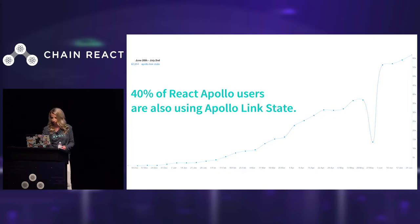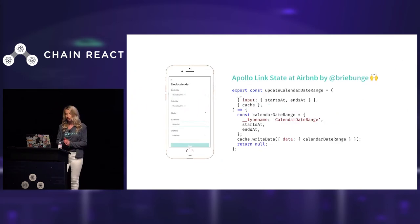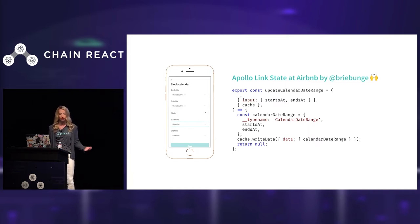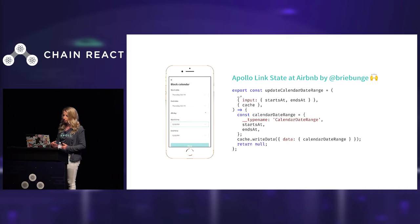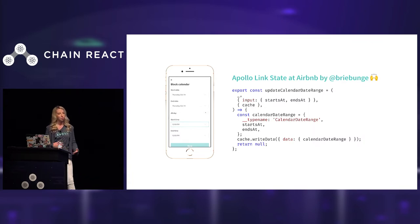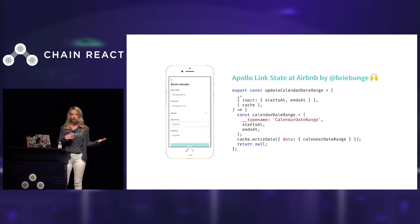Even Airbnb engineers are using it. I gave a version of this talk at Airbnb on Tuesday and found out that they are also moving to Apollo Link State for their local state management. This is an actual code sample from a new unreleased scheduling app that they have — it's using Apollo Link State to manage their form data. If you've worked with GraphQL on the server before, you'll notice that the API for performing a state update is actually exactly similar to the resolver API that you would use on the server.